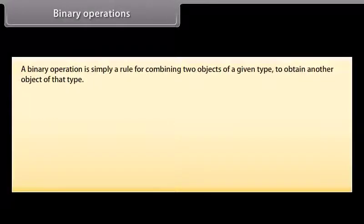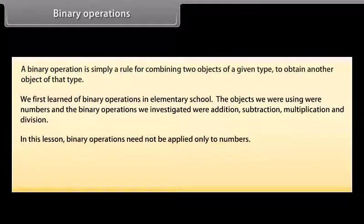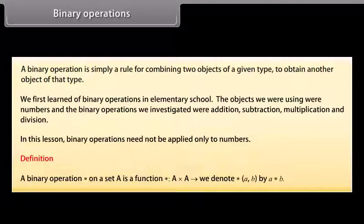Binary operations. A binary operation is simply a rule for combining two objects of a given type to obtain another object of that type. We first learned of binary operations in elementary school — the objects were numbers and the binary operations were addition, subtraction, multiplication and division. In this lesson, binary operations need not be applied only to numbers. Definition: a binary operation * on a set A is a function * from A cross A to A. We denote *(a, b) by a * b.